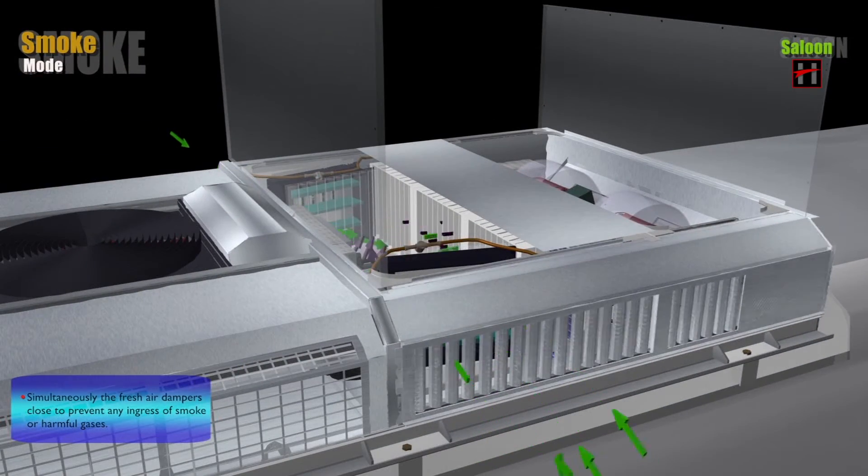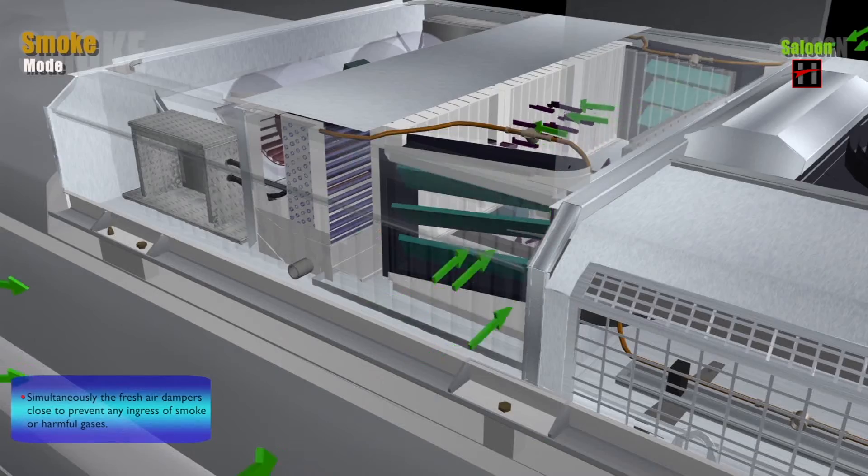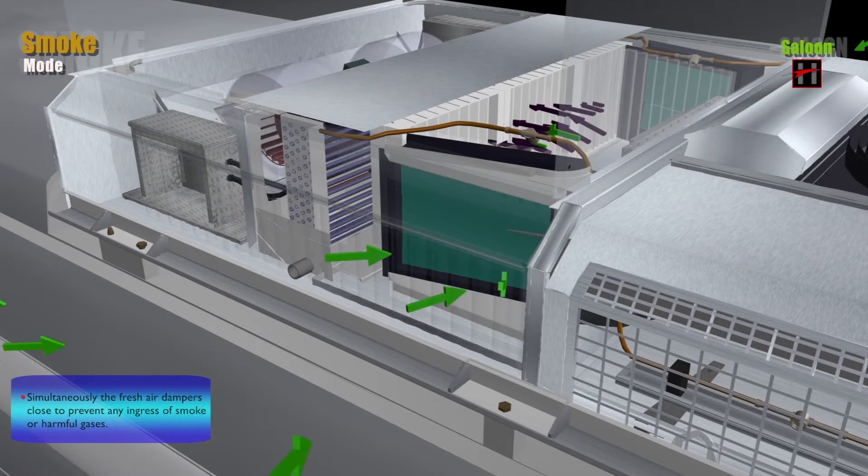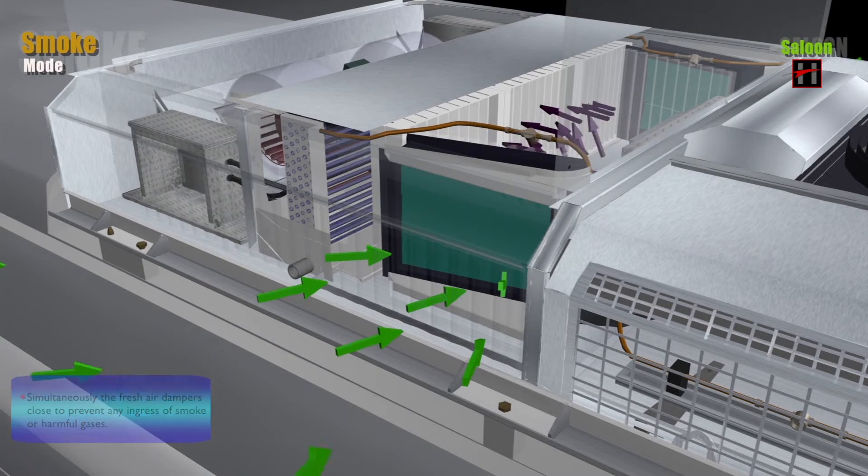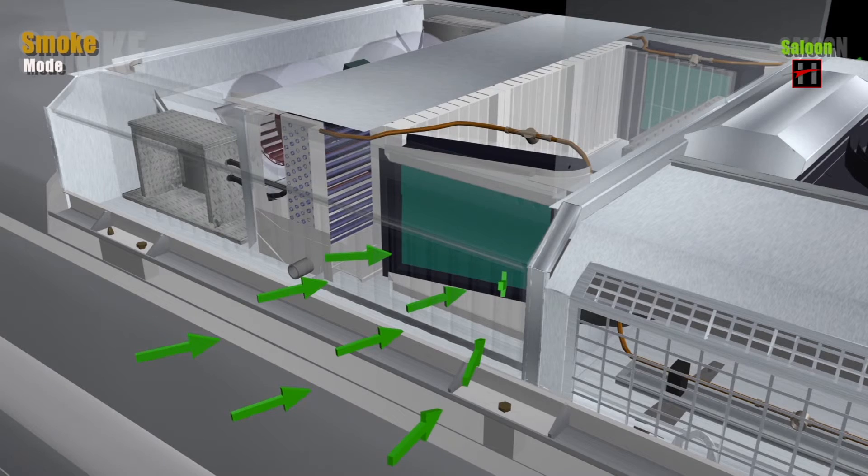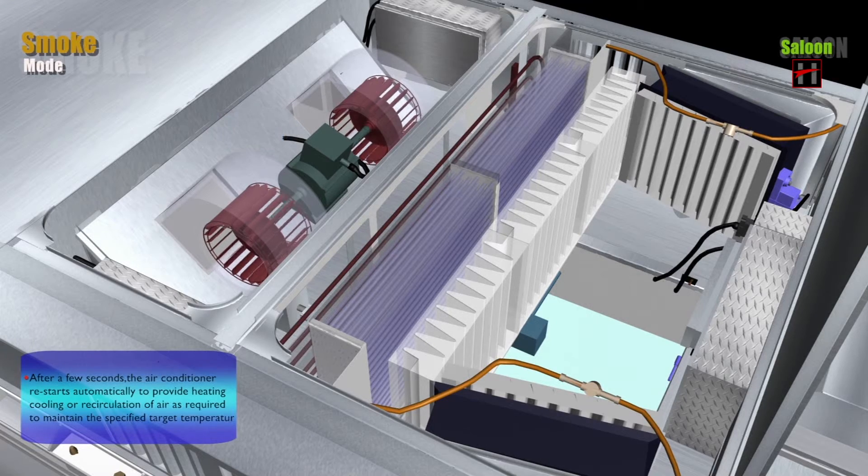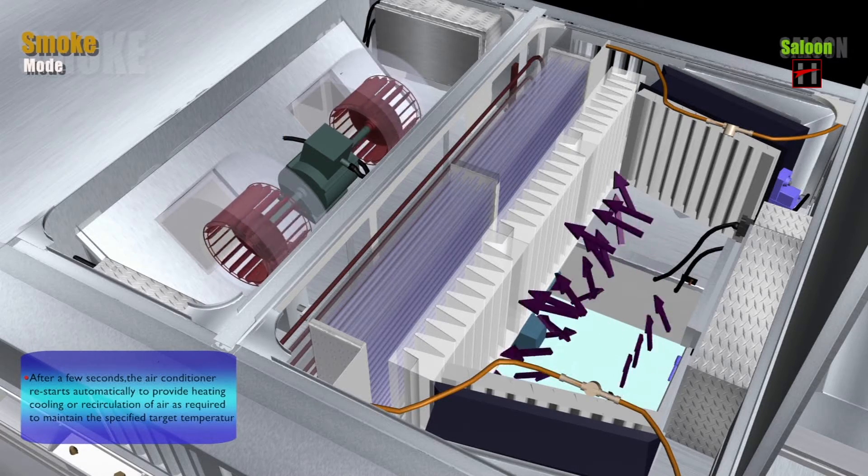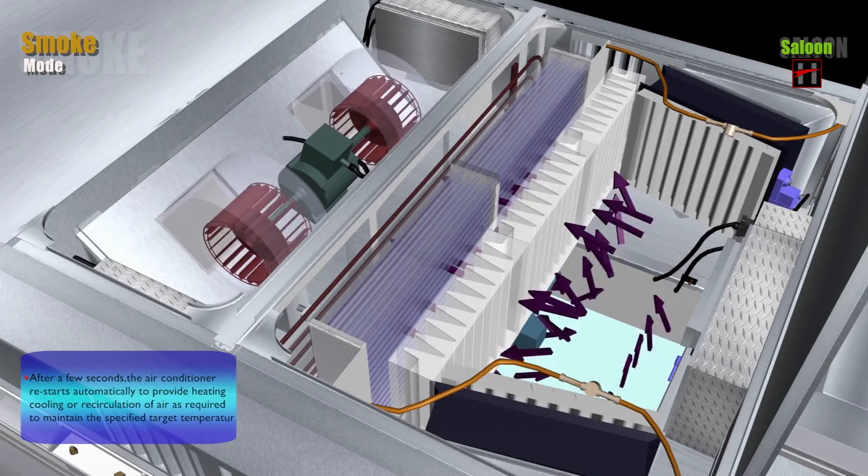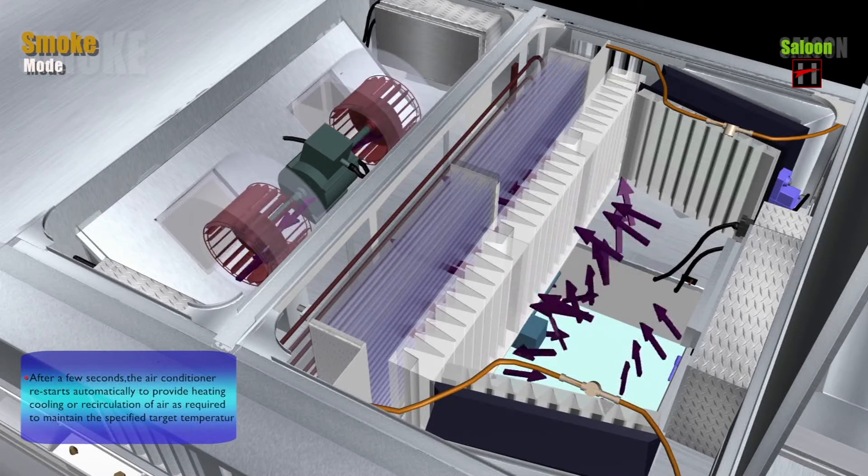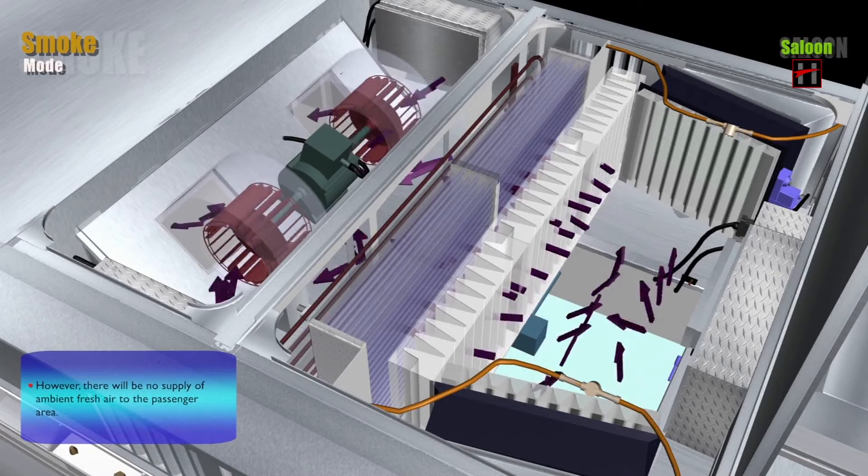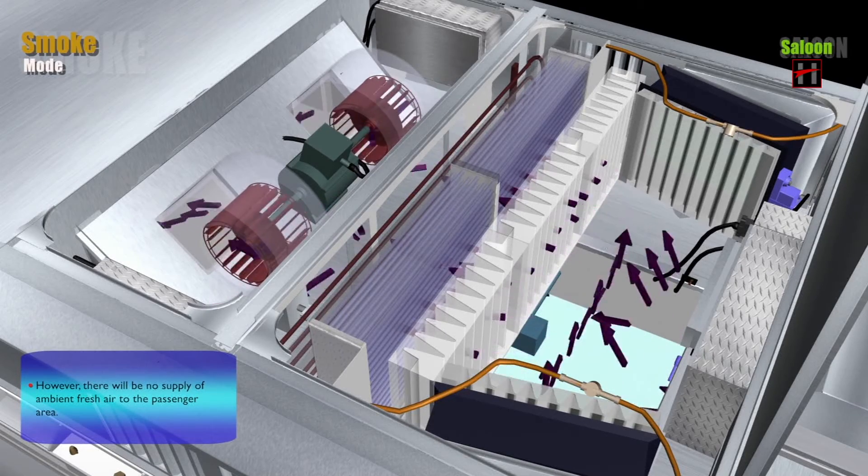Simultaneously, the fresh air dampers close to prevent any ingress of smoke or harmful gases. After a few seconds, the air conditioner restarts automatically to provide heating, cooling or recirculation of air as required to maintain the specified target temperature. However, there will be no supply of ambient fresh air to the passenger area.